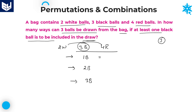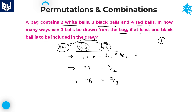Case 1: select 1 black from 3 — that is 3C1 ways; the remaining 2 balls from the 6 non-black balls — that is 6C2 ways. Case 2: select 2 black from 3 — that is 3C2 ways; the remaining 1 ball from 6 — that is 6C1 ways. Case 3: select all 3 black balls — that is 3C3 ways; no further selection needed from other colors.